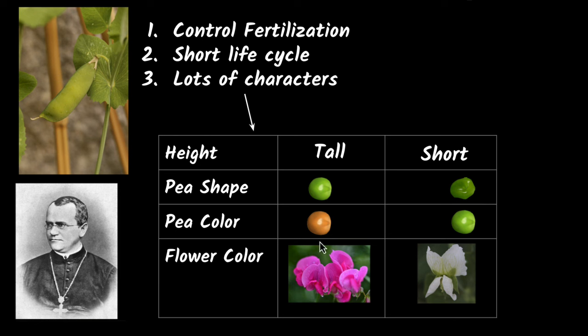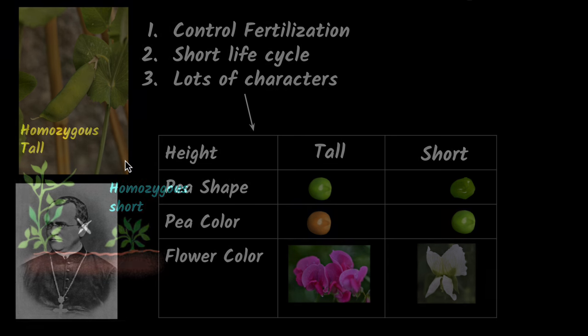Because of that, we can now experiment with so many things. And that's why Mendel chose to experiment with pea plants. All right, but now let's see exactly what experiment did he do.